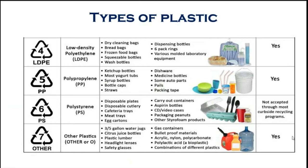The sixth category is polystyrene, used for disposable items. This is not acceptable for recycling programs. These include disposable glasses, plates, cutlery, CD cases, and egg cartons. The seventh and last category is 'other plastics,' labeled as 'O,' which is also recyclable and includes items like citrus juice bottles, plastic lumber, headlight lenses, and gas containers.